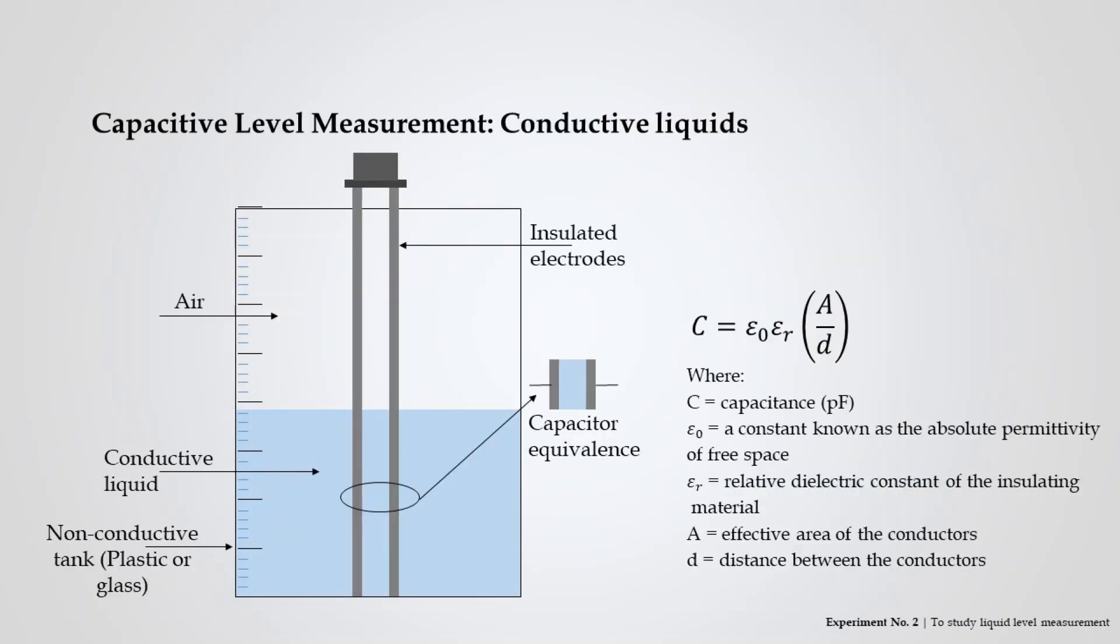The level measurement setup of conductive liquids consists of a non-conductive tank usually of plastic, glass, or acrylic in nature. Two insulated metal electrodes are placed apart from each other. The liquid used for measurement should be strictly conductive in nature. The two insulated electrodes act as two plates of a capacitor with air and water acting as a dielectric material separating them. The capacitance developed across these two electrodes is represented by the equation shown below. This capacitance is directly proportional to the liquid level in the tank.